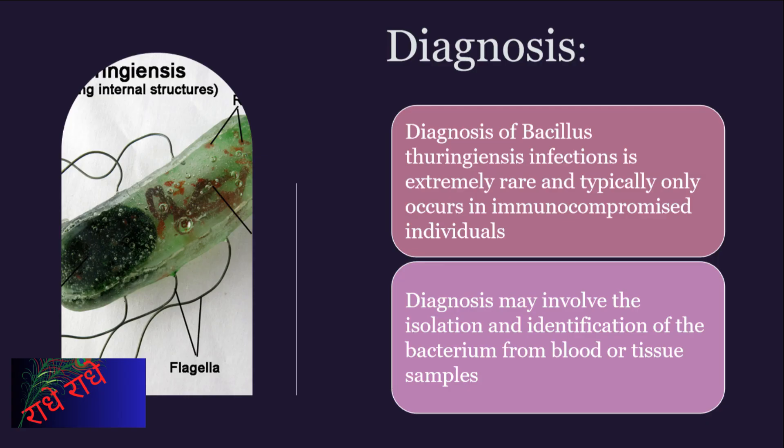B. thuringiensis is an environmentally friendly bacterium that has been used as a pesticide for decades, but can also cause infections in some vulnerable individuals, particularly those with compromised immune systems. To confirm the presence of the bacterium, samples must be collected and tested from the blood or tissue of the affected individual. Knowing the diagnosis is imperative for the proper treatment of this condition.